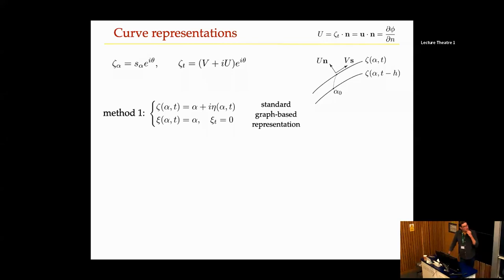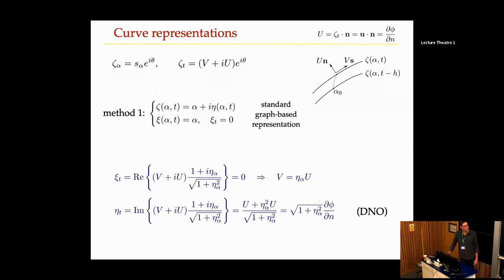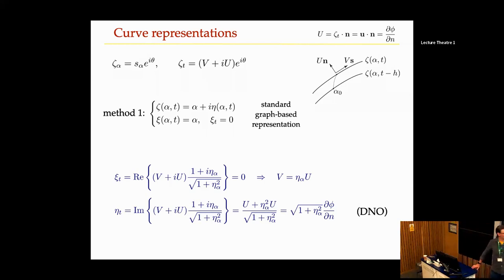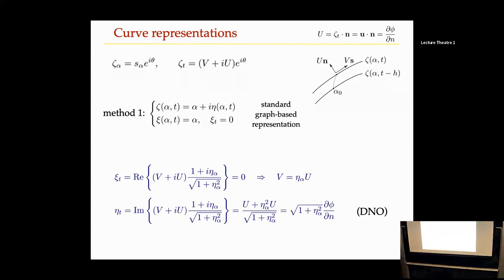One option is a graph-based formulation. For fairly low-amplitude waves that's a really good approach. In the Hou-Lowengrub-Shelley framework, choosing the tangential velocity so each particle moves only vertically gives the familiar Dirichlet-Neumann operator for the eta-t equation, and you don't have to evolve xi at all.